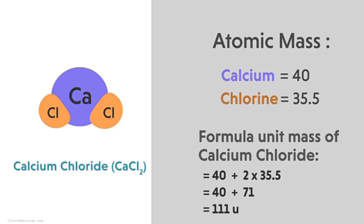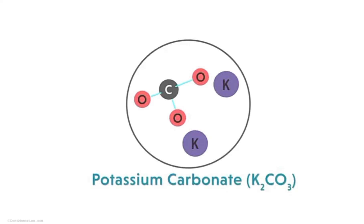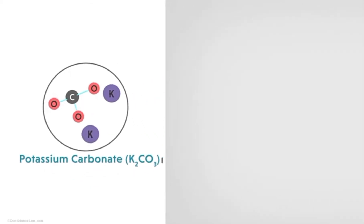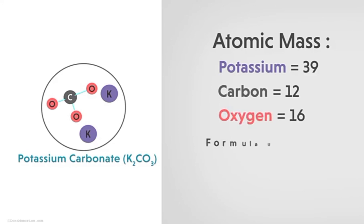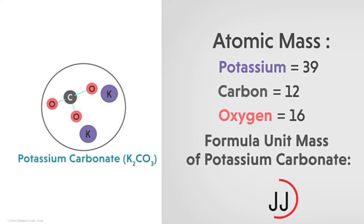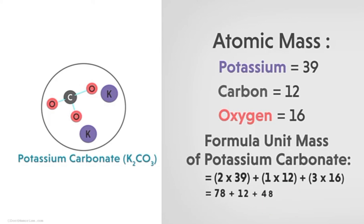Another example is potassium carbonate. The formula of potassium carbonate is K₂CO₃. The atomic masses are: K = 39, C = 12, and O = 16. After calculation, the formula unit mass of potassium carbonate is 138 units.